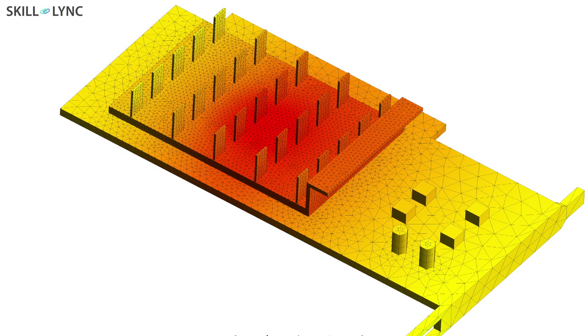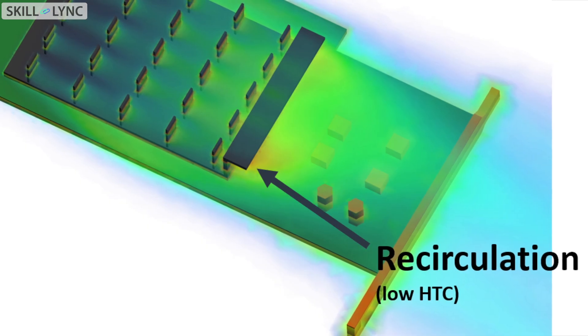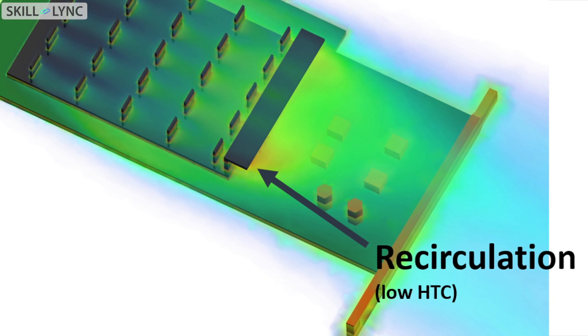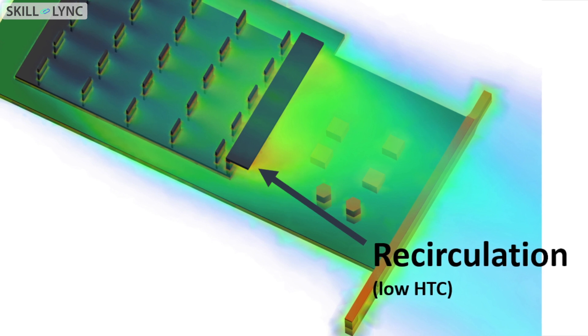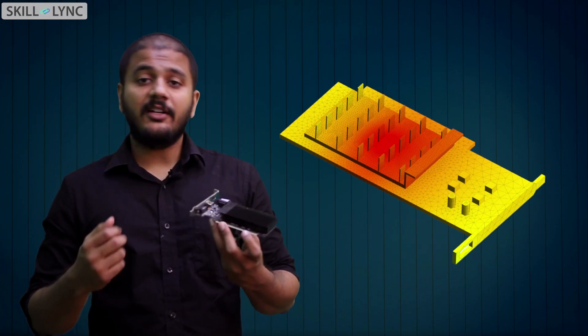In addition to this, you can also see that there are some high temperature zones, especially when there is flow recirculation. When there is flow recirculation taking place, velocity tends to drop, and because of that, convective heat transfer is reduced. Any critical component that is placed in this recirculation zone might encounter thermal damage.